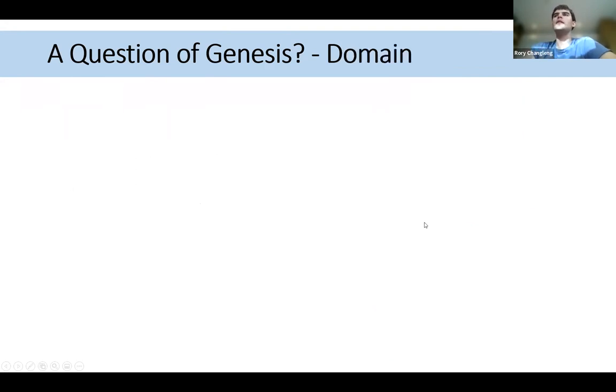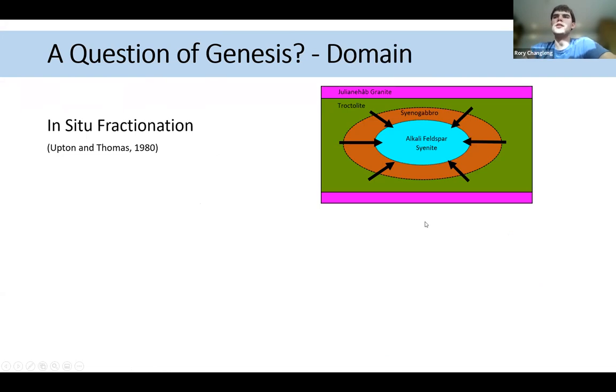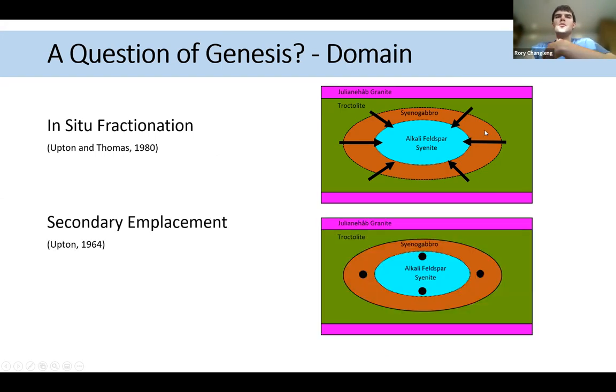And do we see multiple emplacements of material or is it one single emplacement? In terms of the domain itself, do we see in situ fractionation, which is the syenite and syenogabbro essentially forming from the troctolite, which is traditionally what has been thought to have occurred here, or do we see the secondary emplacement of material, possibly derived from elsewhere within the giant dike or at depth somewhere?